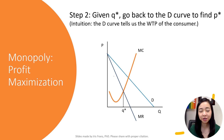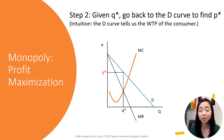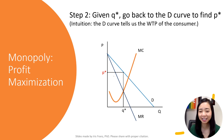After finding Q star, project this quantity Q star to the demand curve to find the corresponding price on the demand curve. Why? Because the demand curve tells you what the consumer's willingness to pay is given quantity Q star. So that's the highest price that a monopolist can charge given the quantity Q star.